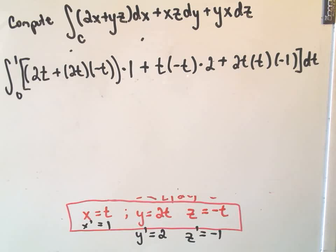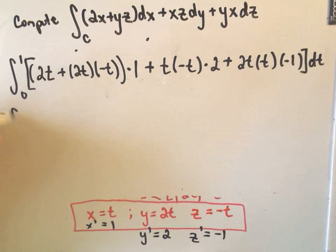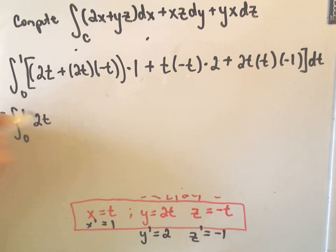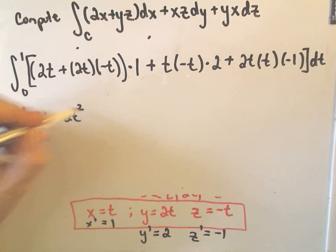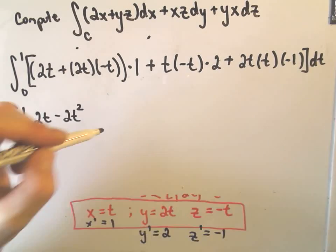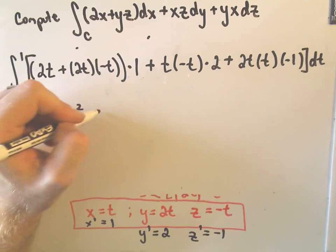Okay, so a little long, a little tedious, but again, not too bad of an integral, really, to compute at this point. So let's see if we can't simplify it down here. So it looks like we've got 2t in the first set of parentheses. It looks like we're going to get negative 2t squared. Again, we're just multiplying by 1. Our middle term, it looks like we'll get negative 2t squared.